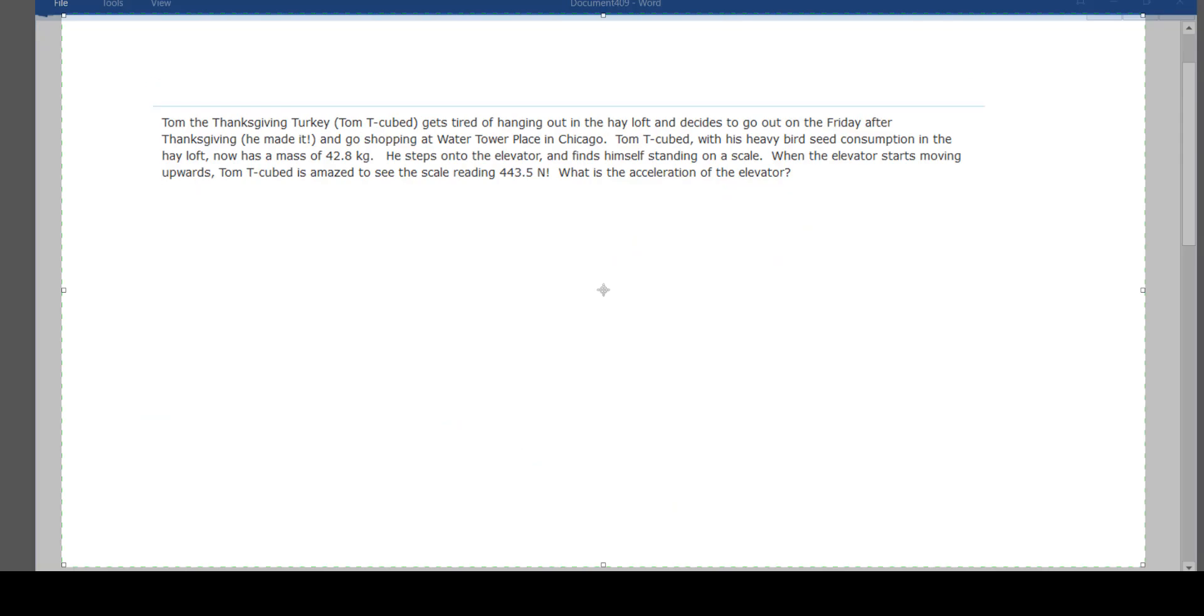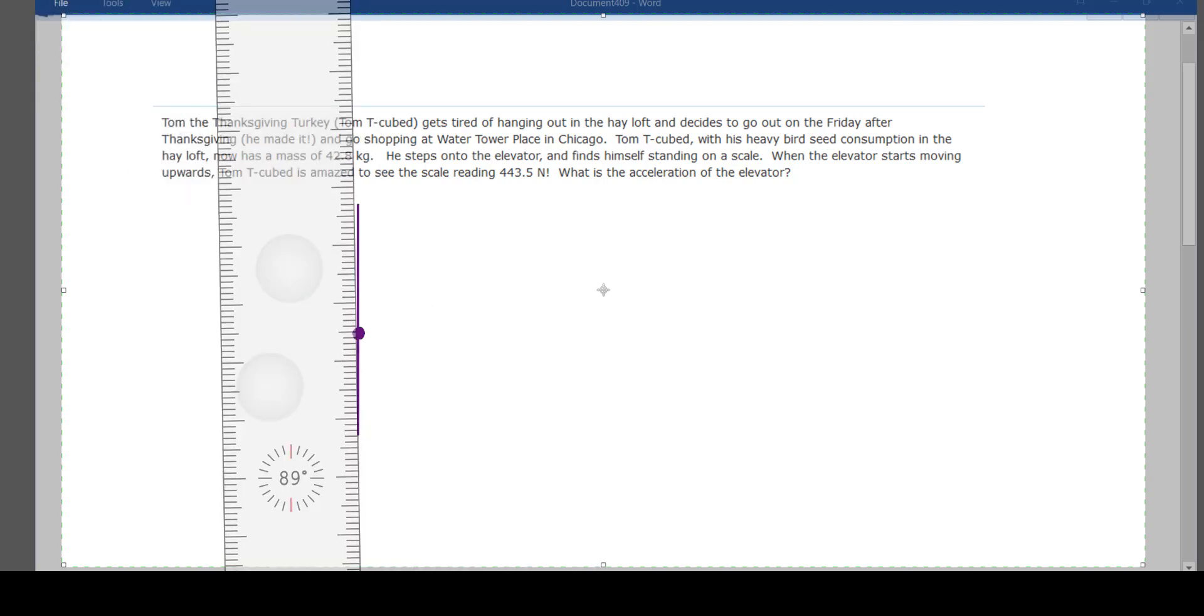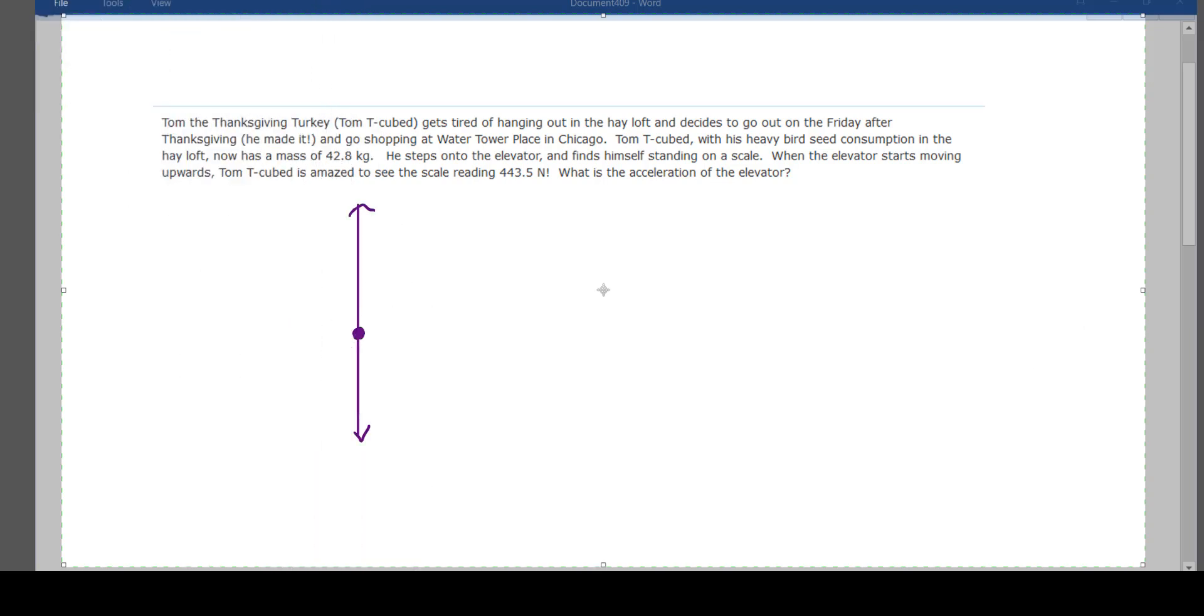Problem two finds Tom now at the water tower place in Chicago. He now has a mass of 42.8 kilograms, and he steps on an elevator and sees himself standing on a scale. When the elevator starts moving upwards, Tom T. Cube is amazed to have the scale read 443.5 newtons. What is the acceleration of the elevator? Well, first I draw my free body diagram.